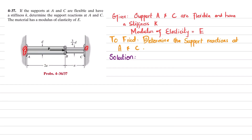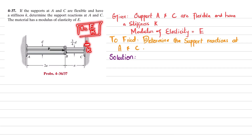It is given that supports A and C are flexible, which means they can slightly move. Due to their movement there will be a displacement, and since the stiffness is K, this displacement is given by F over K. We have to find the reaction support forces at points C and A.